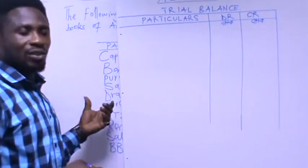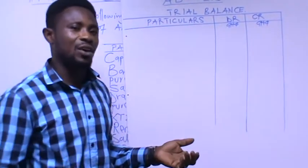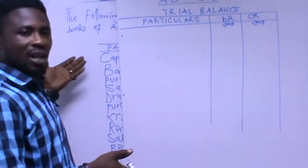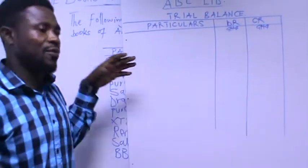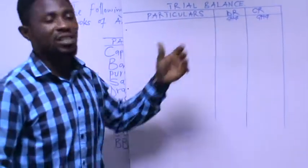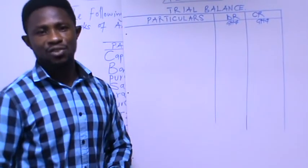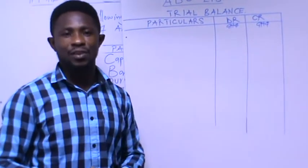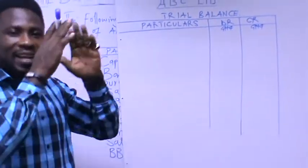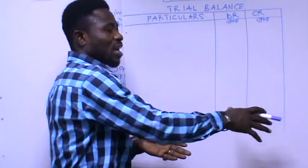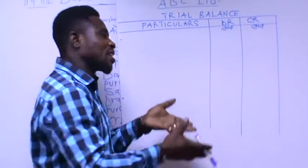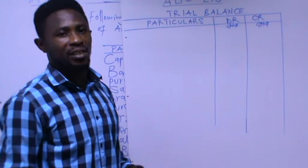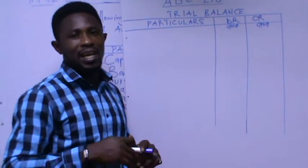If an account has a debit balance at the end of the accounting period, you take that balance and put it in the debit side of the trial balance. If it is a credit balance, you put it in the credit side of the trial balance. At the end, you total the two sides and they must agree — the trial balance must balance at the end of preparing it.